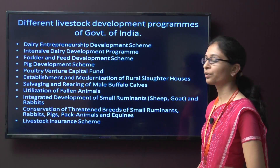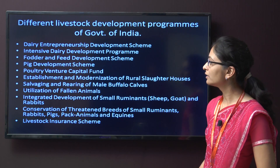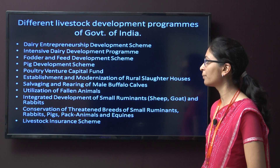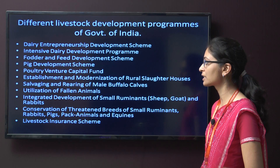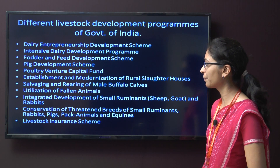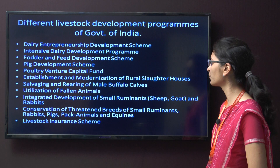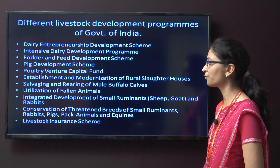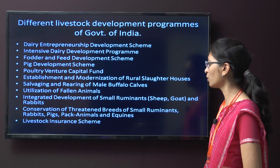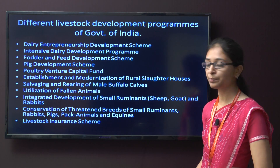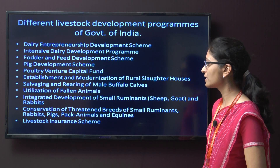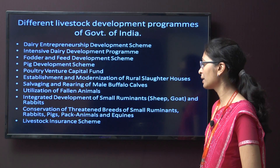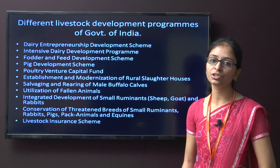The different livestock development programs in the Government of India include: the dairy entrepreneurship development scheme, intensive dairy development program, fodder and feed development scheme, pig development scheme, poultry venture capital fund, establishment and modernization of rural slaughterhouses, salvage and rearing of male buffalo calves, utilization of fallen animals, integrated development of small ruminants (sheep, goats, and rabbits), conservation of threatened breeds of small ruminants, rabbits, pigs, pack animals and equines, and the livestock insurance scheme.